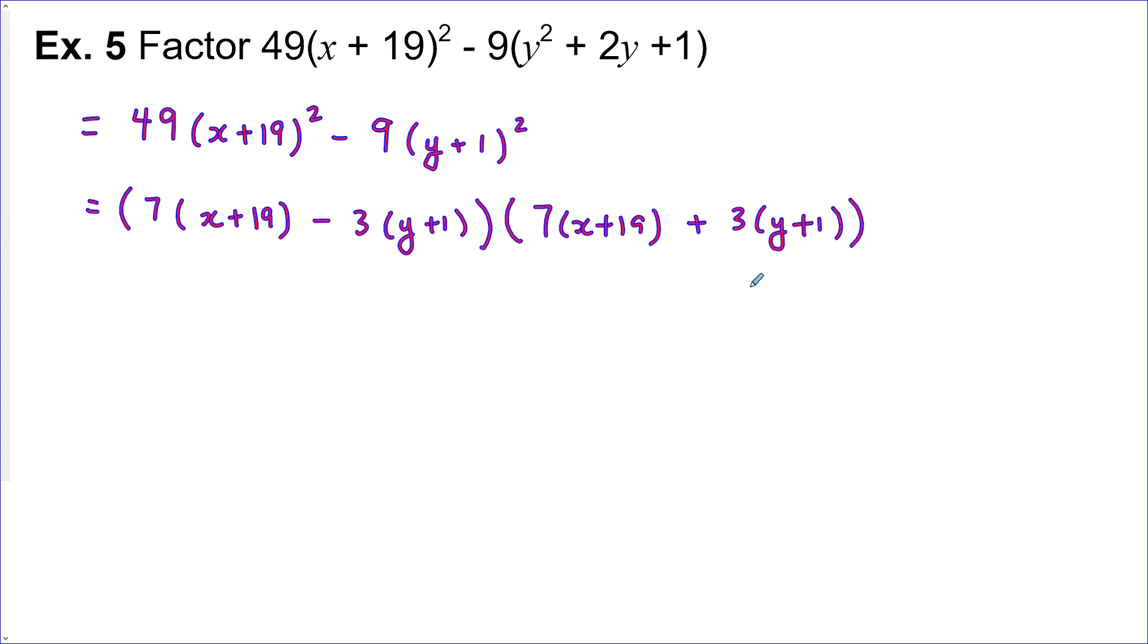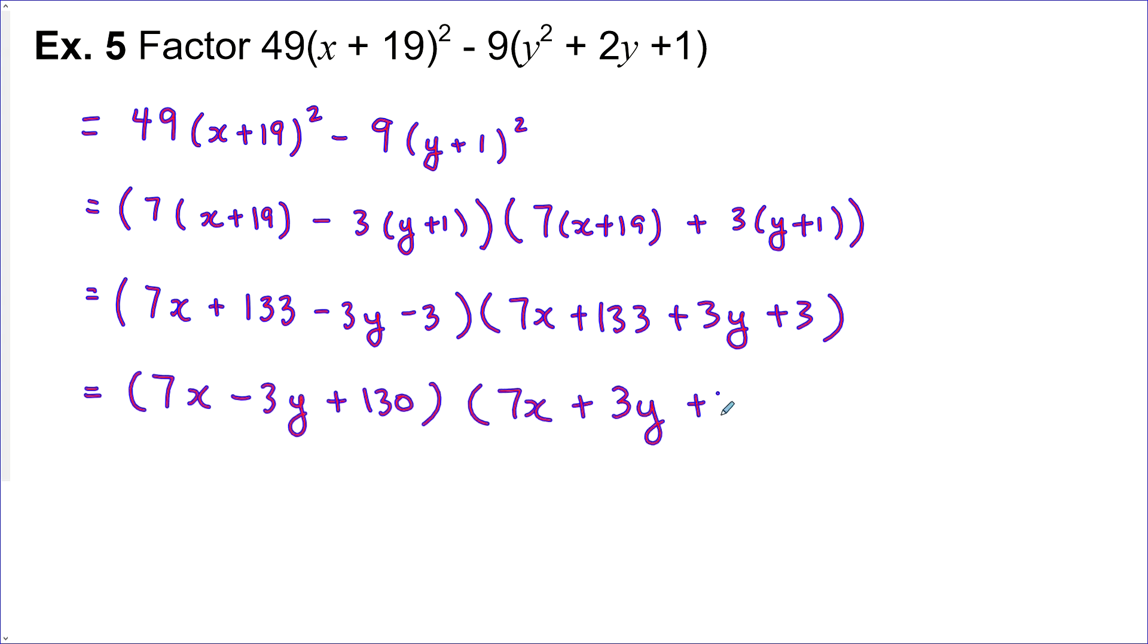And then it still looks not that friendly, but you can multiply in the 7, multiply in the 3, and collect up like terms and see how it looks. We've got 7x plus 133 minus 3y minus 3, plus 3y plus 3. Collect up some like terms here. 7x minus 3y plus 130. 7x plus 3y plus 136.